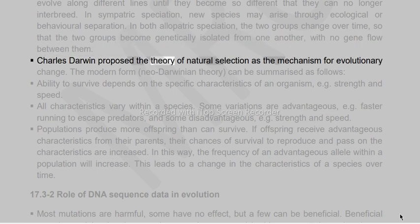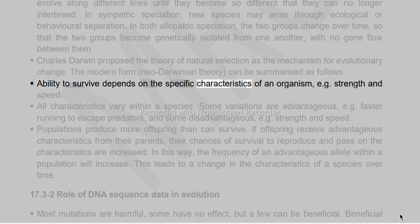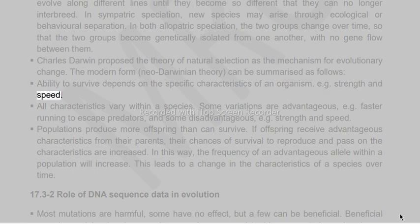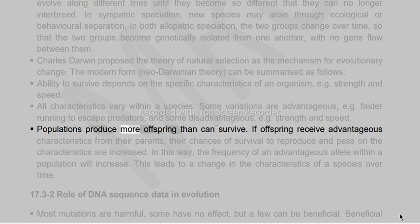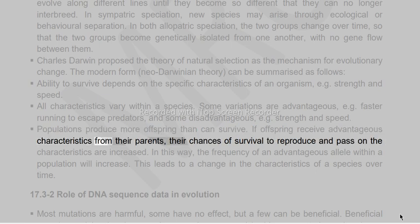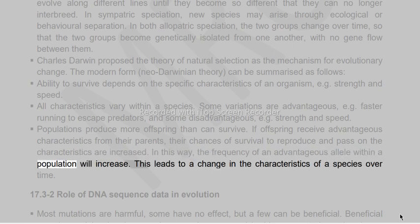Charles Darwin proposed the theory of natural selection as a mechanism for evolutionary change. The modern Neo-Darwinian theory can be summarized as follows: ability to survive depends on the specific characteristics of an organism such as strength and speed; all characteristics vary within a species; some variations are advantageous (e.g. faster running to escape predators) and some disadvantageous; populations produce more offspring than can survive. If offspring receive advantageous characteristics, their chances of survival to reproduce and pass on the characteristics are increased, so the frequency of an advantageous allele within a population will increase, leading to a change in characteristics over time.